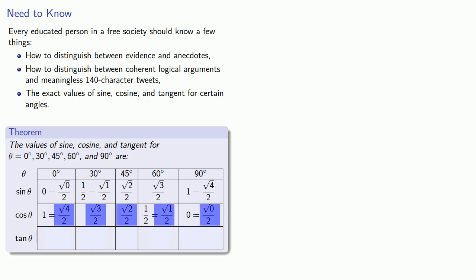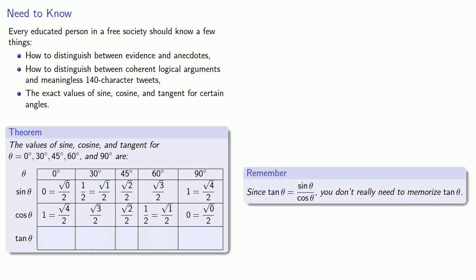Now, you should memorize these sine and cosine values. You should know the tangent values as well, but since tangent is sine over cosine, you don't need to memorize the tangent values separately. Once you know the sine and cosine values, you can calculate them.